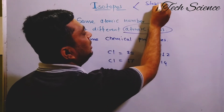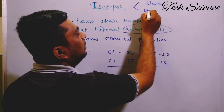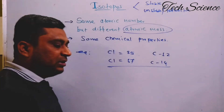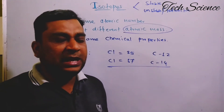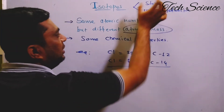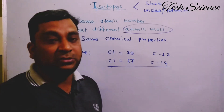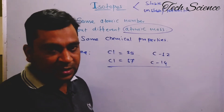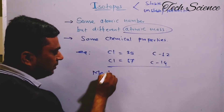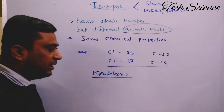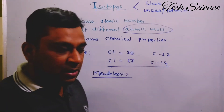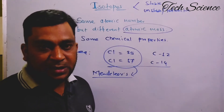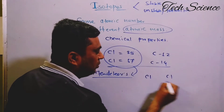Isotopes are divided into two types: stable isotopes and unstable isotopes. Unstable isotopes are called radioactive isotopes. In the modern periodic table, radioactive isotopes are found in the lanthanide or actinide series at the bottom. For now, we are discussing only stable isotopes. Chlorine has atomic masses 35 and 37; carbon has 12 and 14. According to Mendeleev's periodic table, elements are arranged in increasing order of atomic mass — so placing chlorine presents a difficulty.